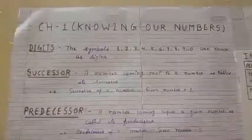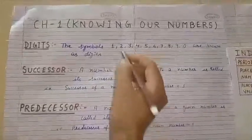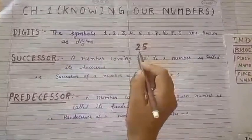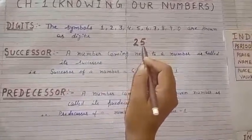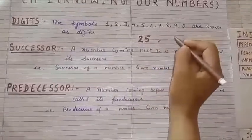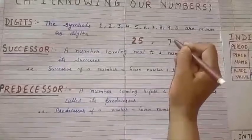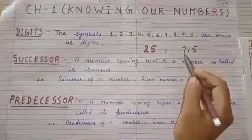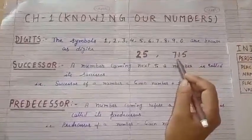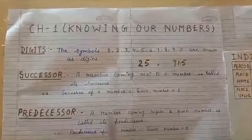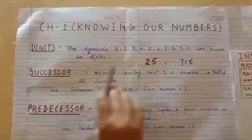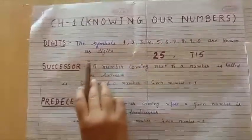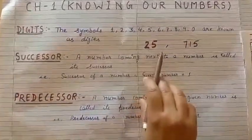Numbers are formed using digits. For example, 25 is a two-digit number — 2 is a digit and 5 is a digit. Another example: 715 — this is a three-digit number, and the digits are 7, 1, and 5. So digits are these 10 symbols: 1, 2, 3, 4, 5, 6, 7, 8, 9, and 0, and numbers are formed from digits.